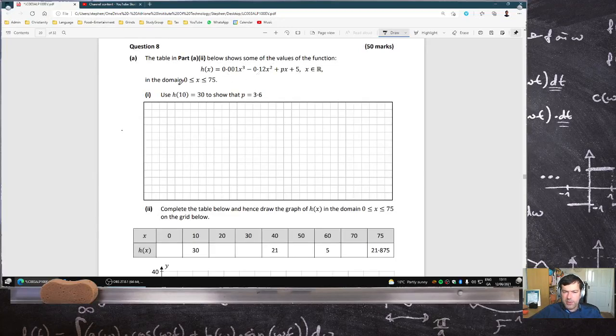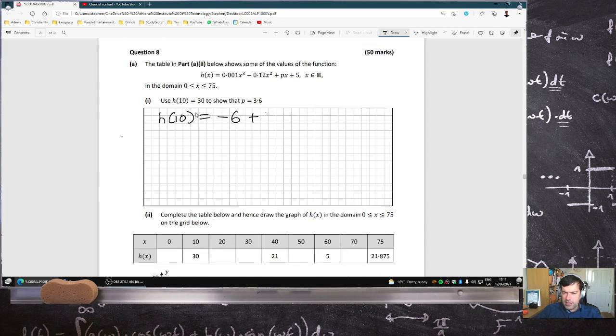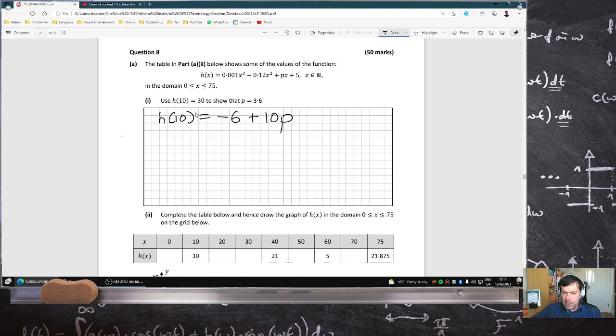Okay, you've got a cubic between 0 and 75. Use h of 10 equals 30 to get p. So h of 10 would equal, if I sub in 10 here, I'd get minus 6 plus 10p, and that's supposed to equal 30. So I can see that p will be 36 over 10.